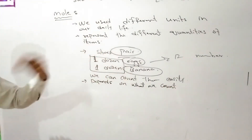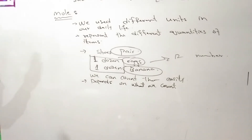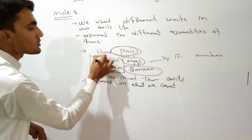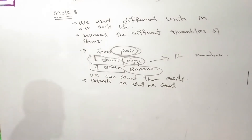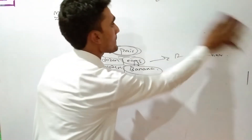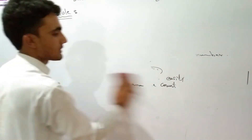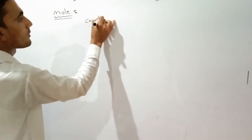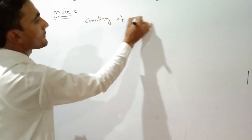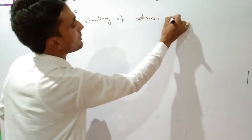Counting units depend on what we are counting. In chemistry, scientists and chemists also use a unit for counting atoms, molecules, and ions — the amount of a substance.